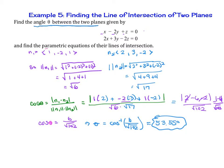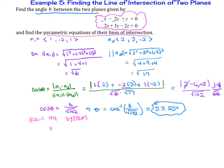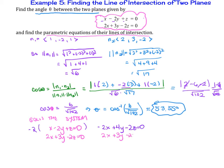Next, we have to find the parametric equations of their line of intersection. To do that, we solve the system for x, y, and z. We have x minus 2y plus z equals 0, and 2x plus 3y minus 2z equals 0. Multiply the top equation by negative 2 to get negative 2x plus 4y minus 2z equals 0. Adding to the second equation, the x terms cancel, giving us 7y minus 4z equals 0.